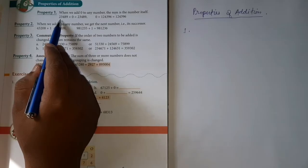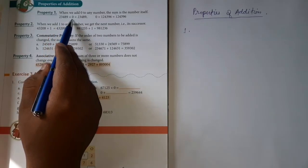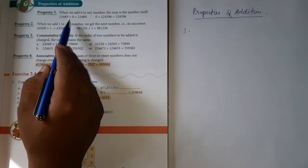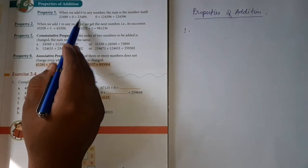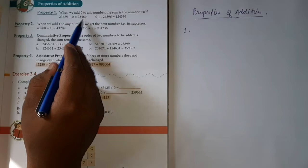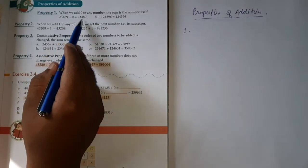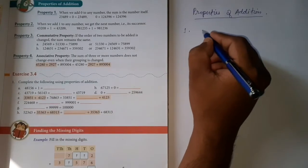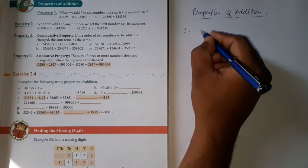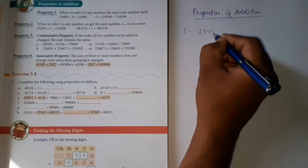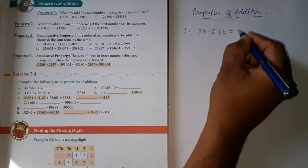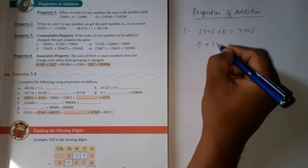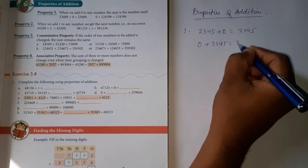Look here. Two thousand, twenty-three thousand, four hundred eighty-nine, when I add zero, what are you getting? You're getting two thousand, twenty-three thousand, four hundred eighty-nine again. So when you add this, you get the same exact number. That's your first property. So what is it? When you add any number plus zero, like 2345 plus zero, you get 2345.